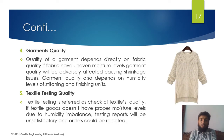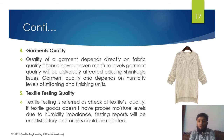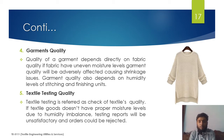The fourth point is garment quality. If the fabrics selected for garment manufacturing have poor moisture levels, the garment will also be affected and can cause shrinkage issues. If garment manufacturing units have improper humidity levels, the quality of the garment will be affected. The fifth point is textile testing quality — a textile testing report is prepared for garments or fabrics, and if the report is poor, the customer will not accept the order.